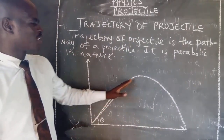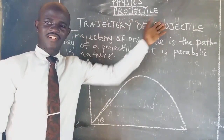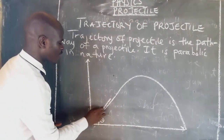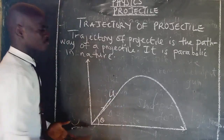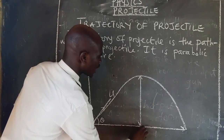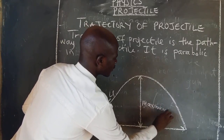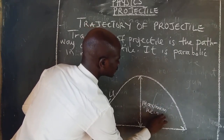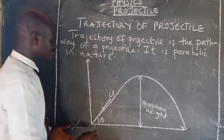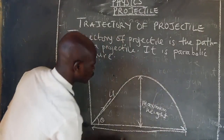This pathway is what is known as the trajectory of a projectile. Let us assume the initial velocity is u. The object will reach a particular height known as the maximum height, and a particular horizontal distance will be covered, known as range.